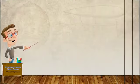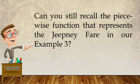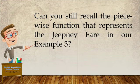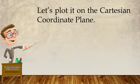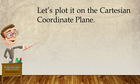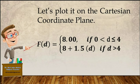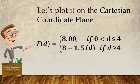Are you still there? Okay, thank you, class, for staying. Now, can you still recall the piecewise function that represents the jeepney fare in example number 3? Let us try to plot it on the Cartesian coordinate plane. f of d is equal to 8 pesos if the distance is less than or equal to 4, and you will be charged 8 pesos plus 1.5 pesos multiplied by the excess distance if the distance is greater than 4.